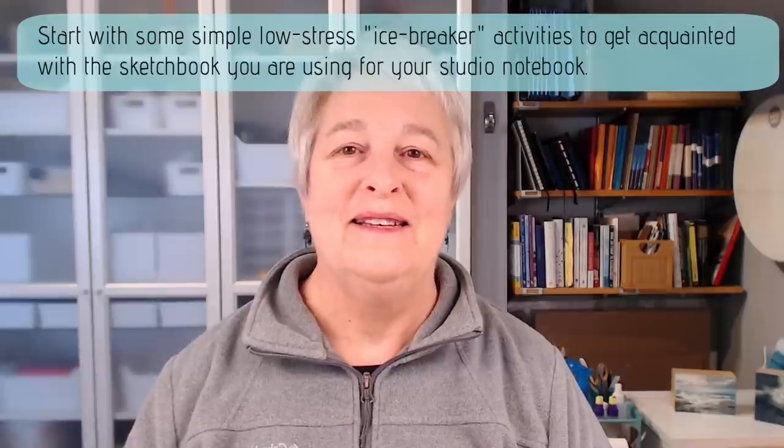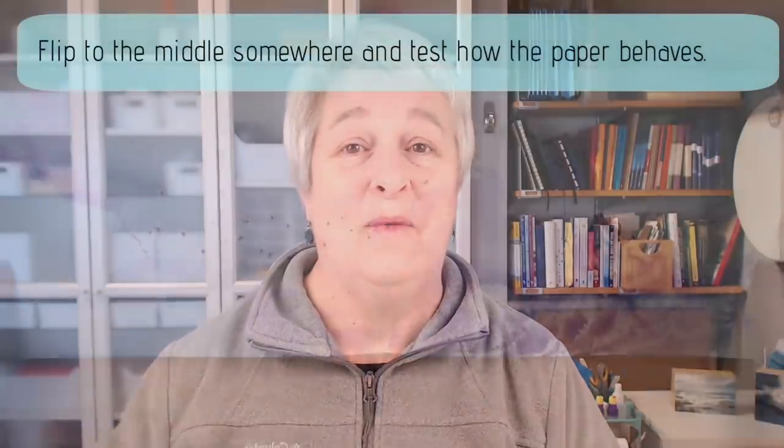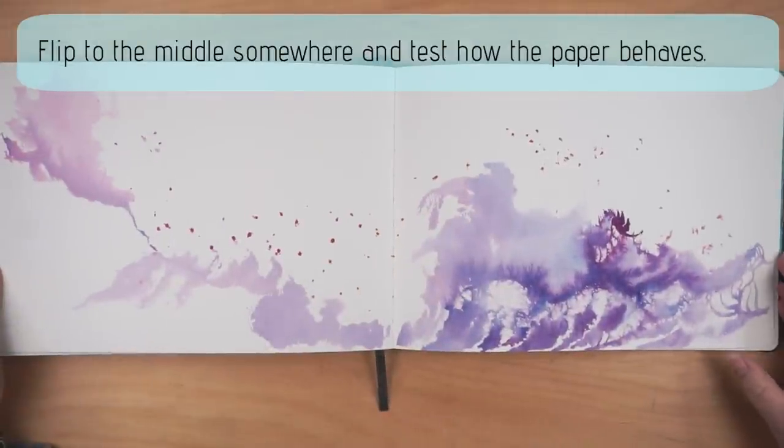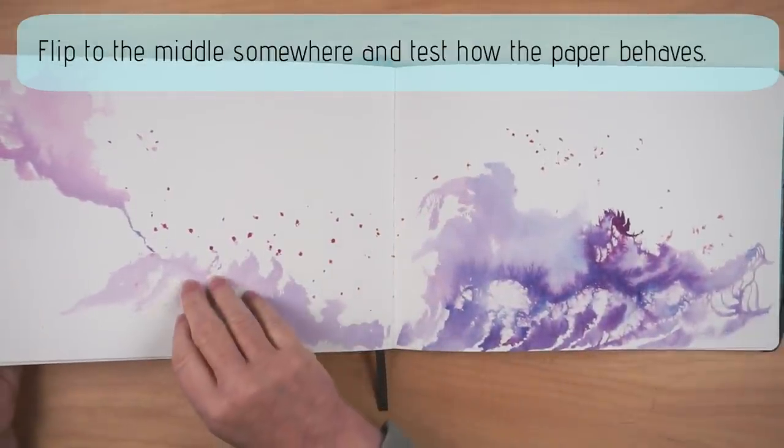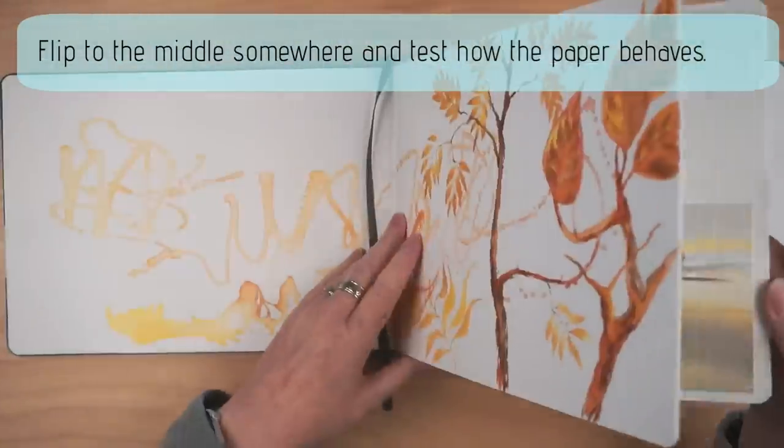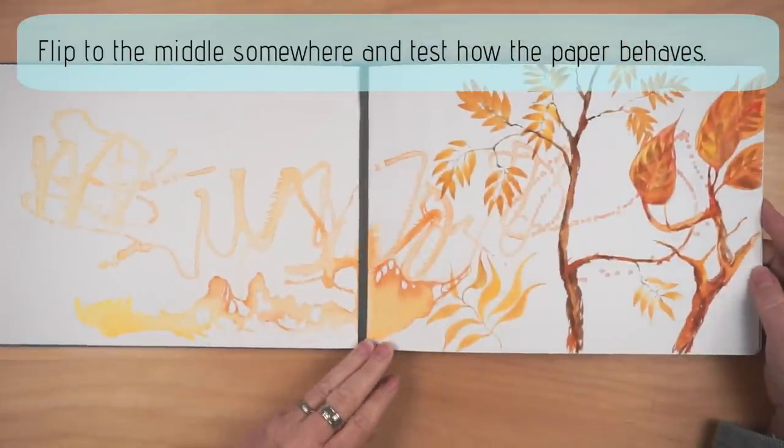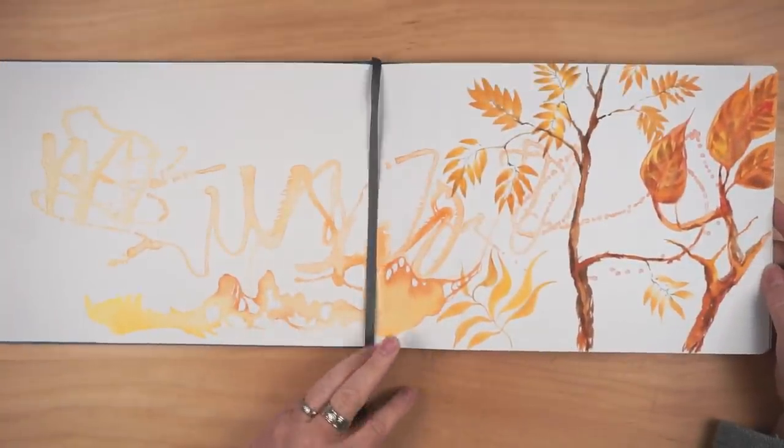So here are some ideas for getting around that feeling of my work isn't worthy to go into this book. The first one is you don't have to start on page one. You can start anywhere. And often what I do is start by just playing on a page somewhere in the middle of the book to get an idea of how the watercolor behaves on this journal's pages.